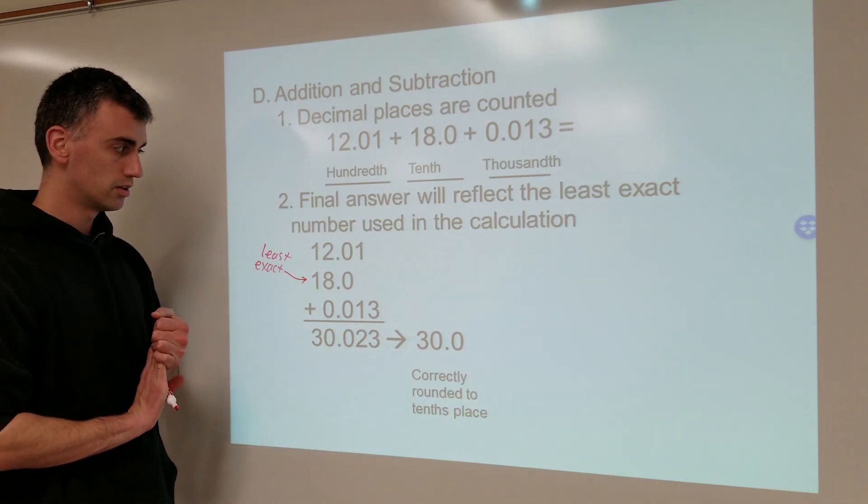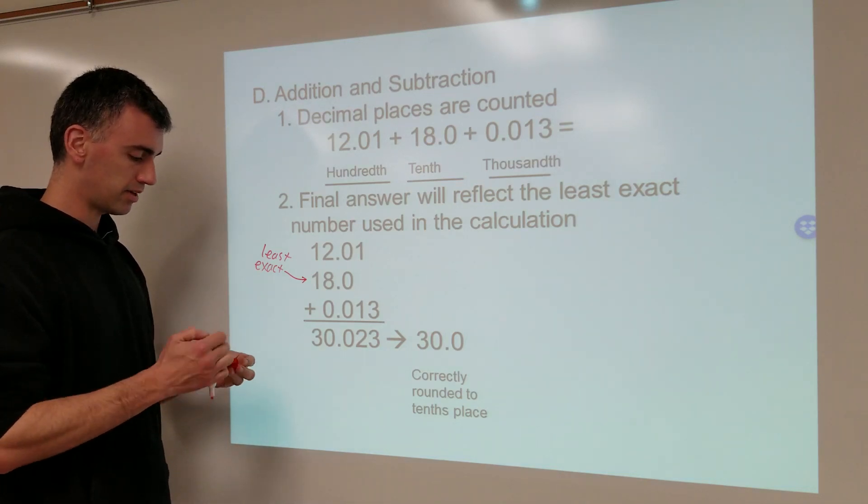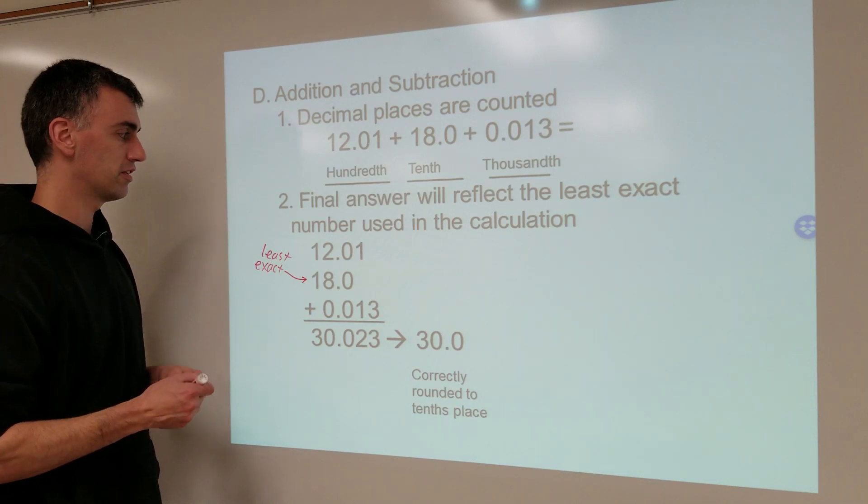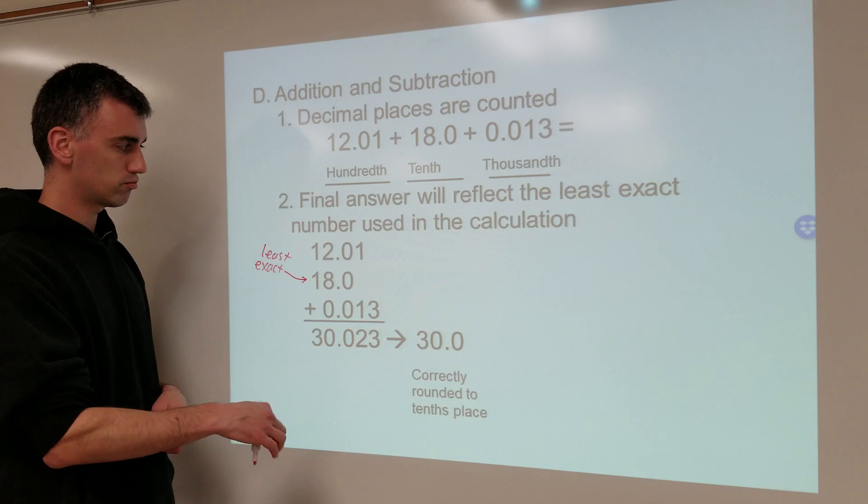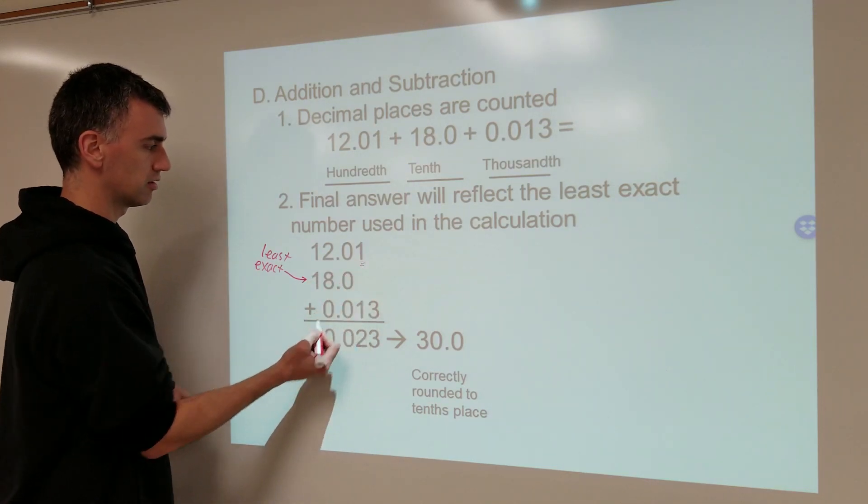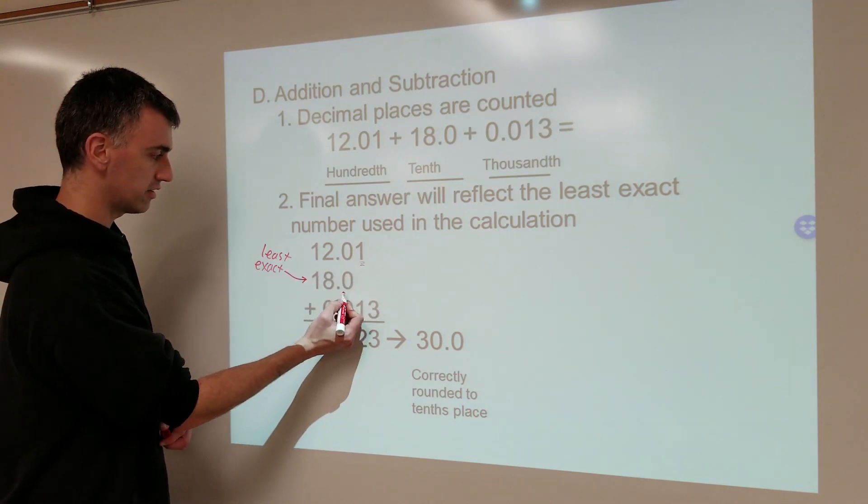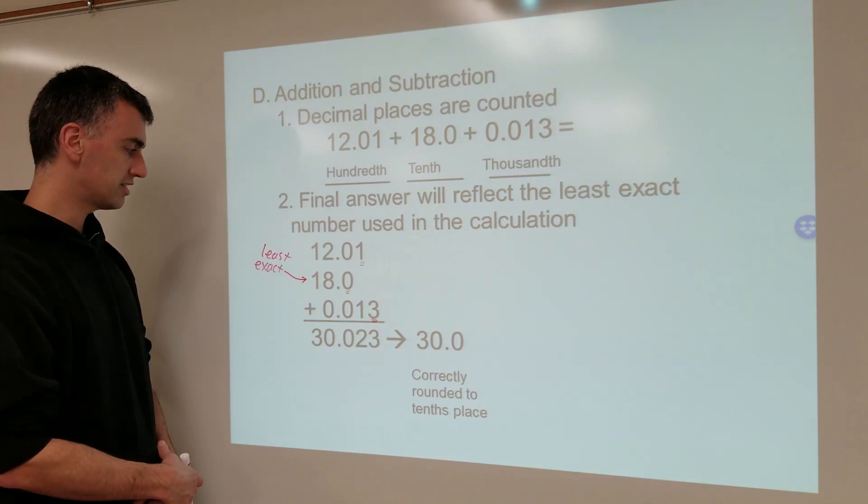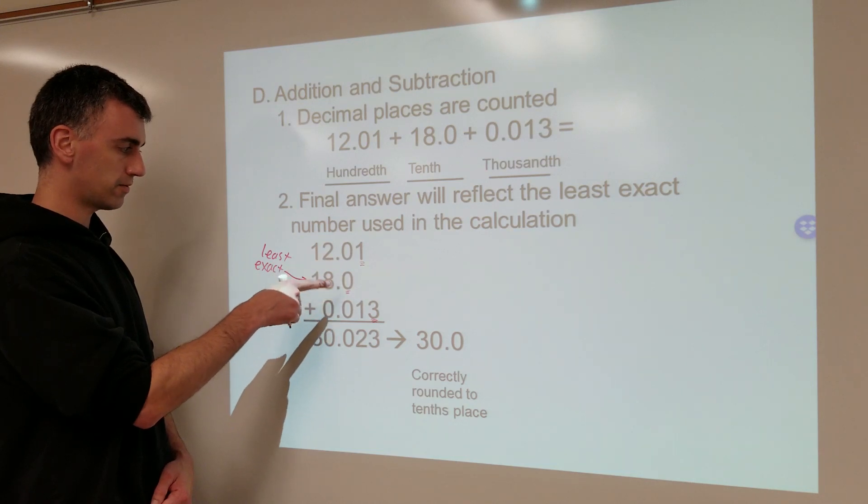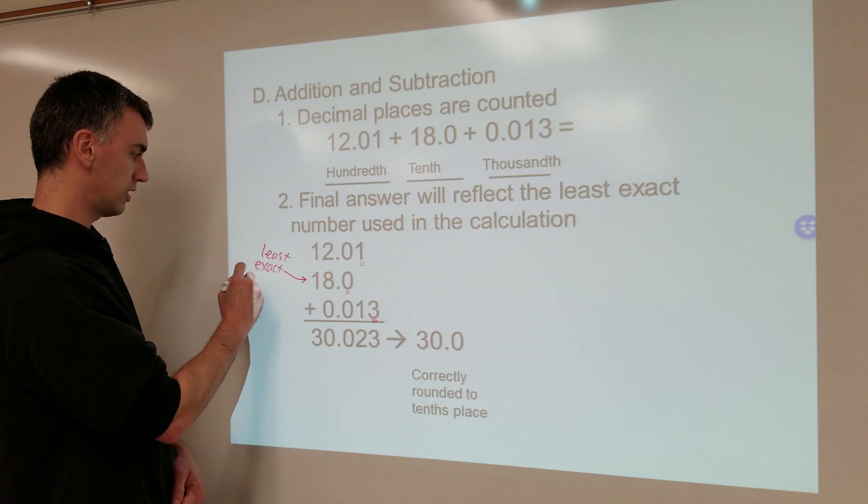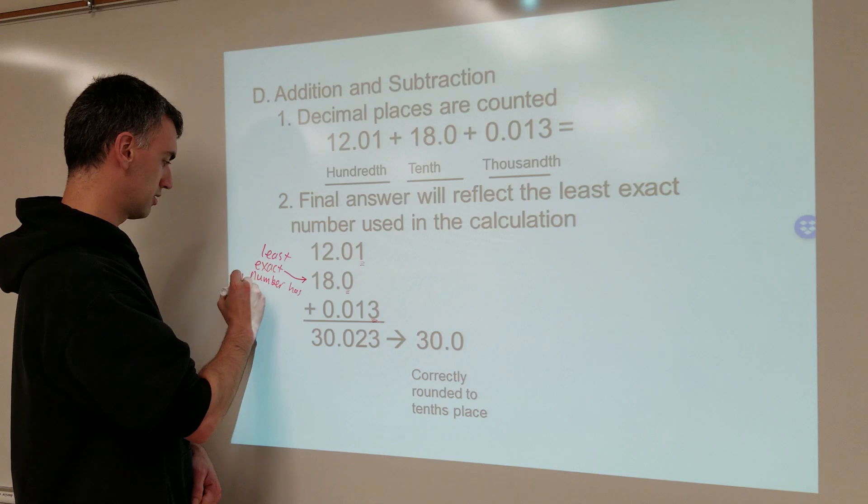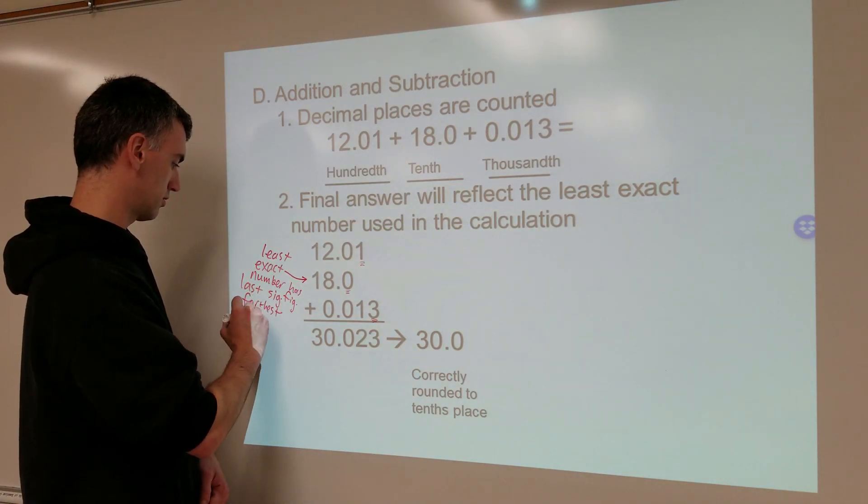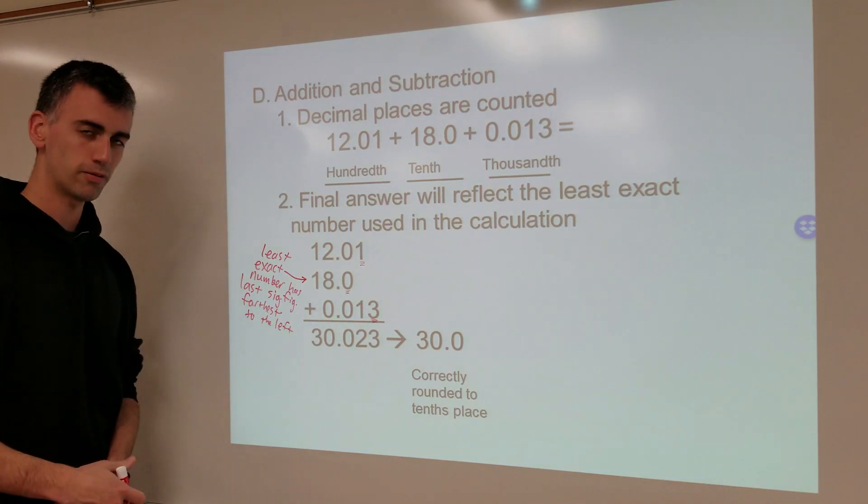Now, when I say that, not everybody gets that right away. One thing that might make it a little easier to see is this. We're going to say we need to identify which number is least exact, so we know how to round the final answer. And when we do that is we underline the last significant digit in each of these numbers. So if we look at this top one, the last significant digit is defined as the one on that side of the number. The middle number, that's the last significant digit. And this number, this is the last significant digit. So we're going to say the least exact number has its final significant digit furthest to the left. You'll notice this last significant digit is farther left than either of the other two.